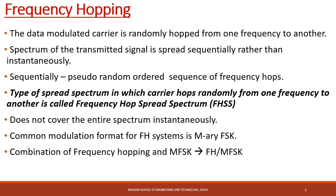In Frequency Hopping Spread Spectrum, we are modulating the data using a carrier and that data will be varied from one frequency to another. When you consider the spectrum of this transmitted signal, it will be spread sequentially. This sequential spreading is done using a pseudo-random sequence. Therefore, it is a type of spread spectrum communication in which a carrier hops randomly from one frequency to another — it is called Frequency Hopping Spread Spectrum.